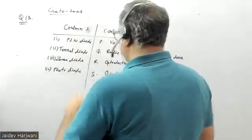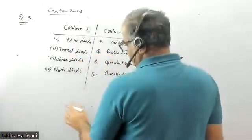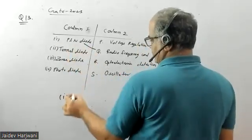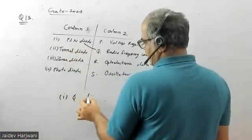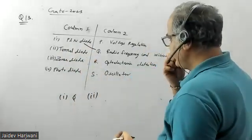PIN diode or PN diode applications are in derivative frequency and microwave regions, so we can write matching as one is corresponding to Q. Then second, tunnel diode is basically used for high frequency.